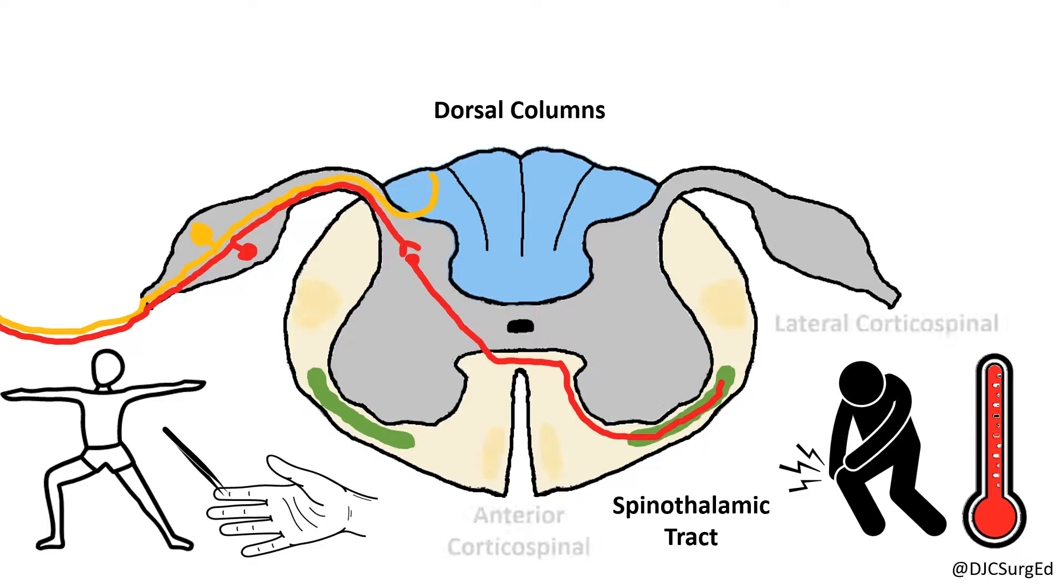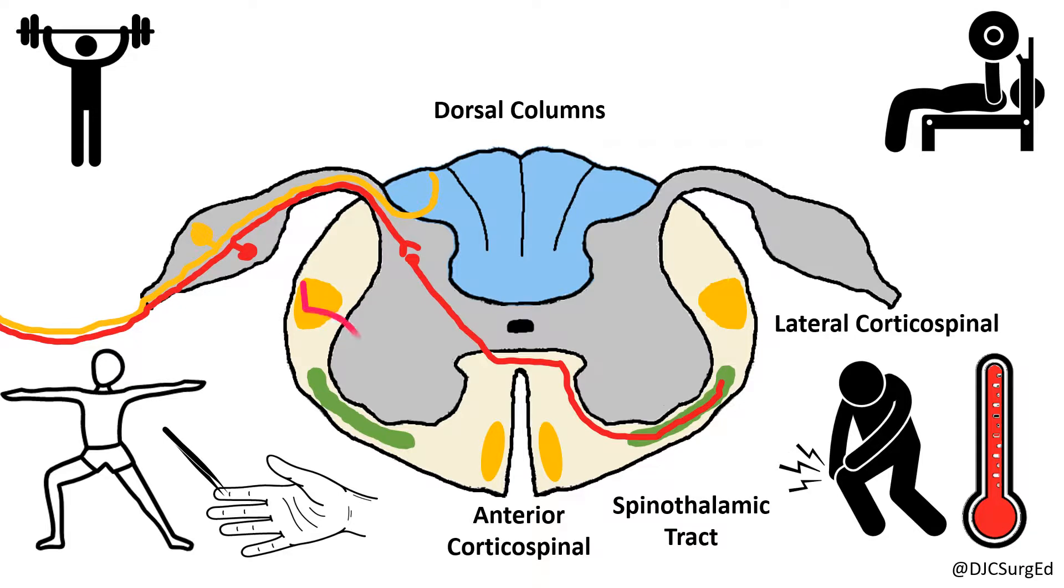Finally, the corticospinal tract carries axial and limb motor information from the brain within the anterior and lateral corticospinal tracts and synapses within the anterior or ventral horn.